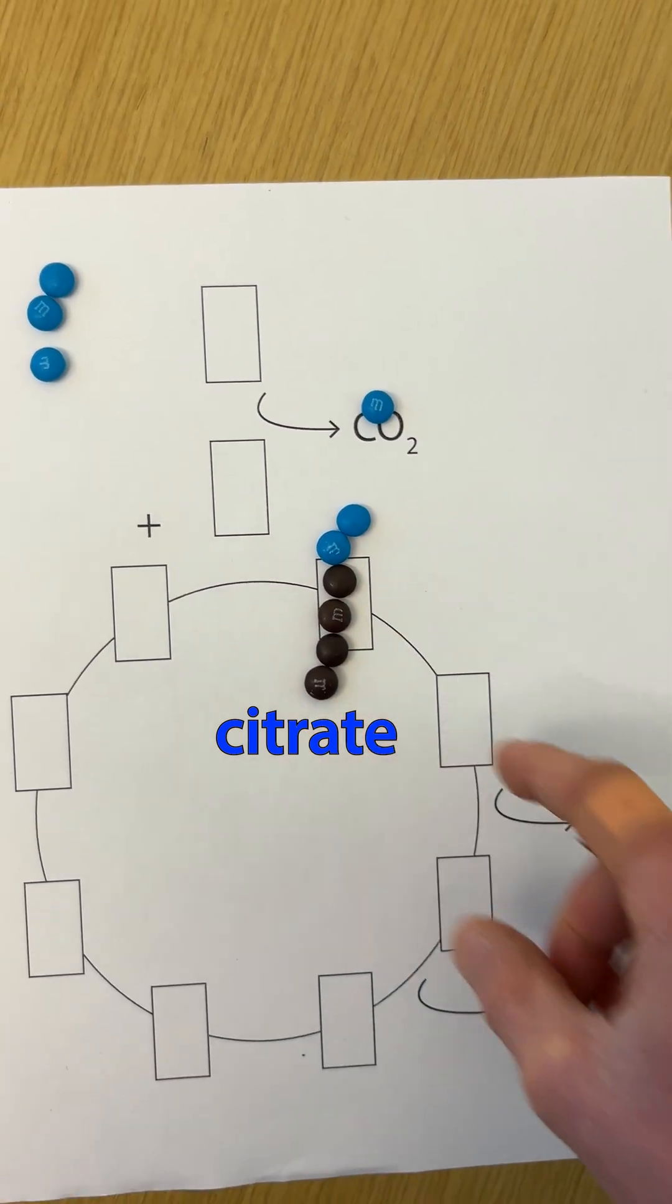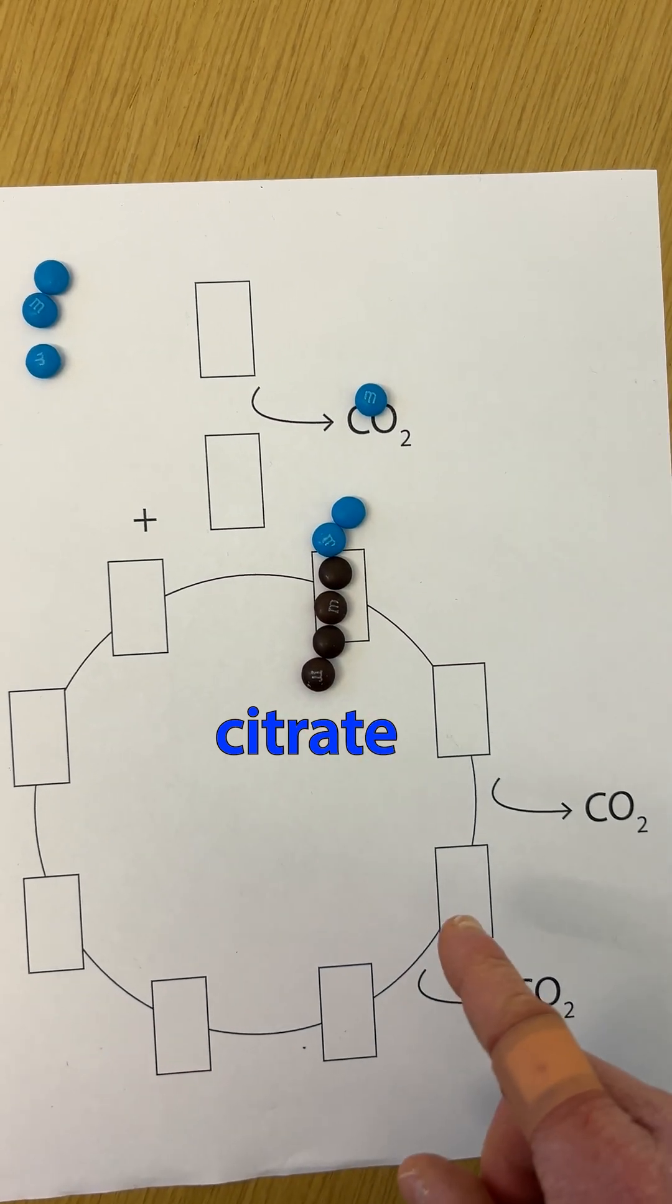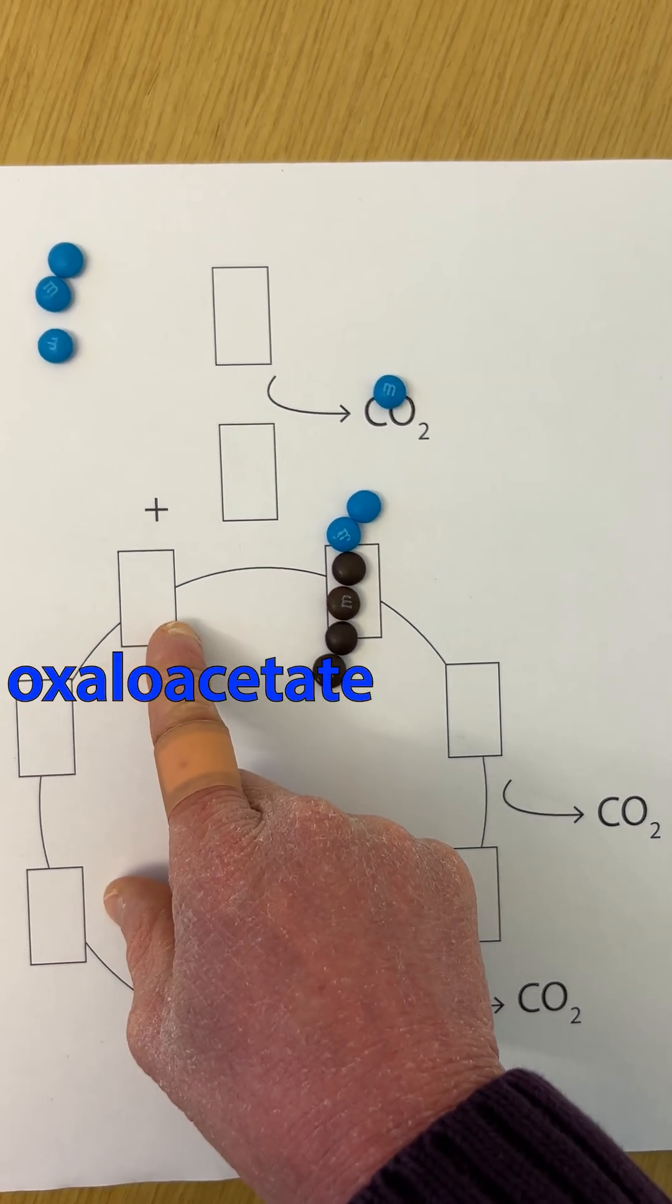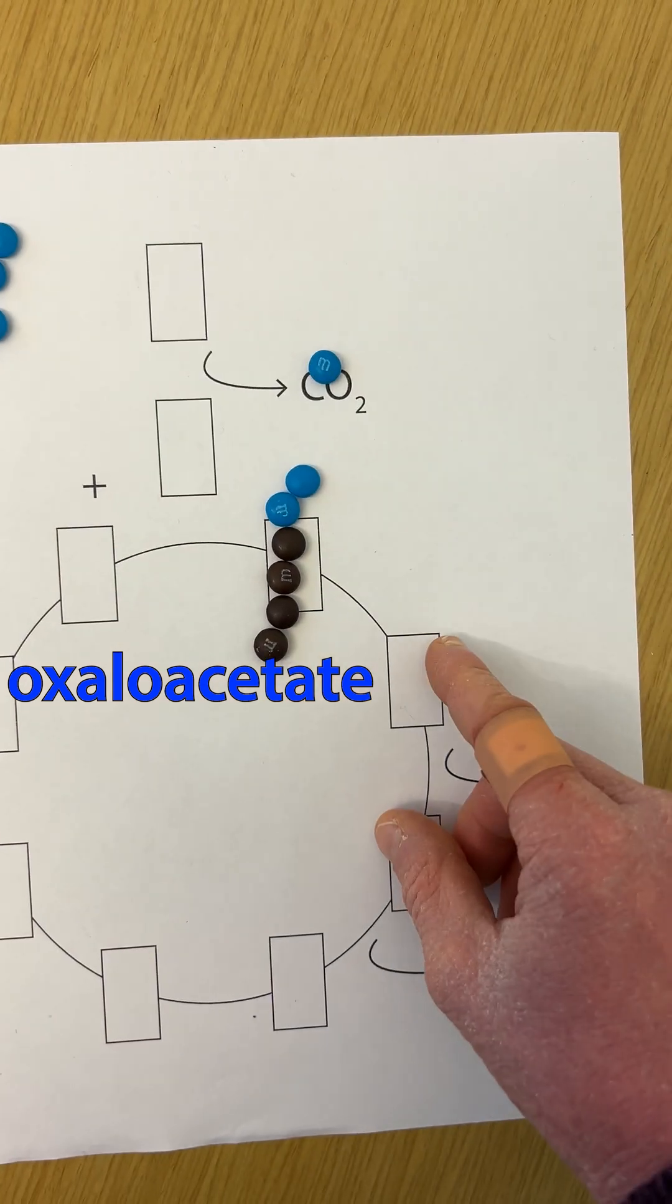Now we're going to go around the cycle and get rid of two carbons as two more carbon dioxides, and regenerate a four-carbon oxaloacetate that we can use to keep this cycle going.